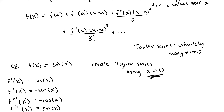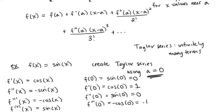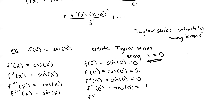So f of zero is equal to sine of zero, which is zero. F prime evaluated at zero is cosine of zero, which is one. F double prime of zero is negative sine of zero, so we get zero. F triple prime of zero is negative cosine of zero, so we get negative one. And then we have the fourth derivative of f evaluated at zero — we have positive sine of zero, which is zero.